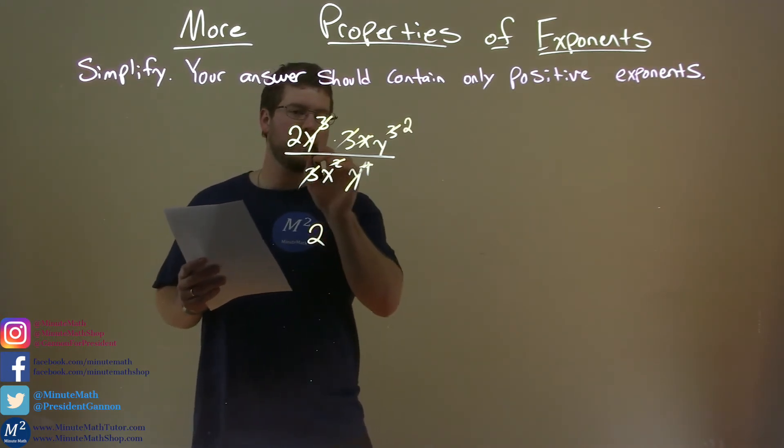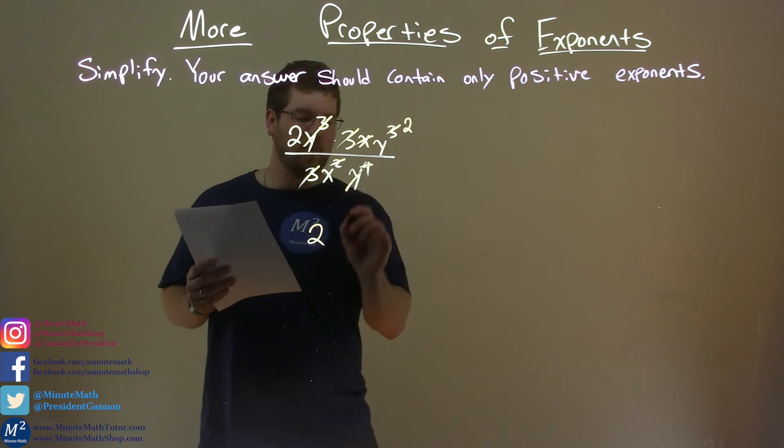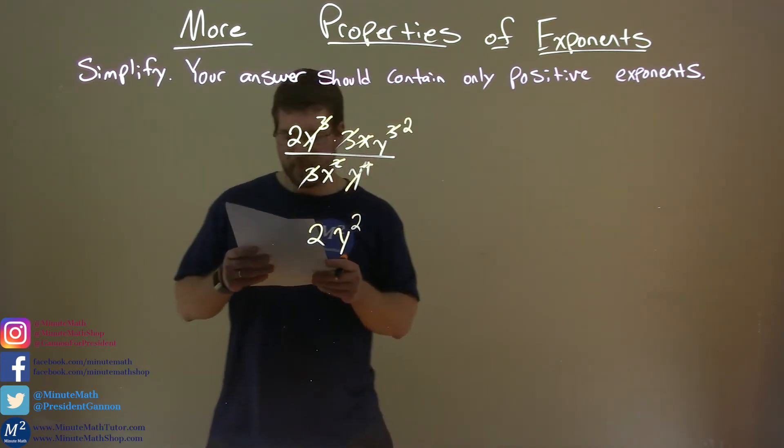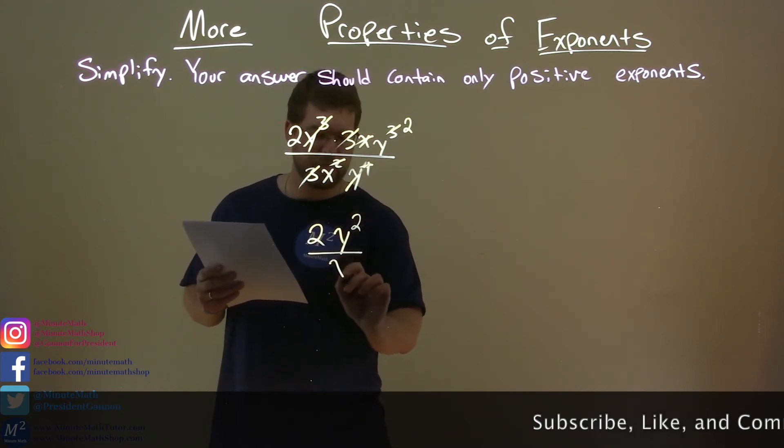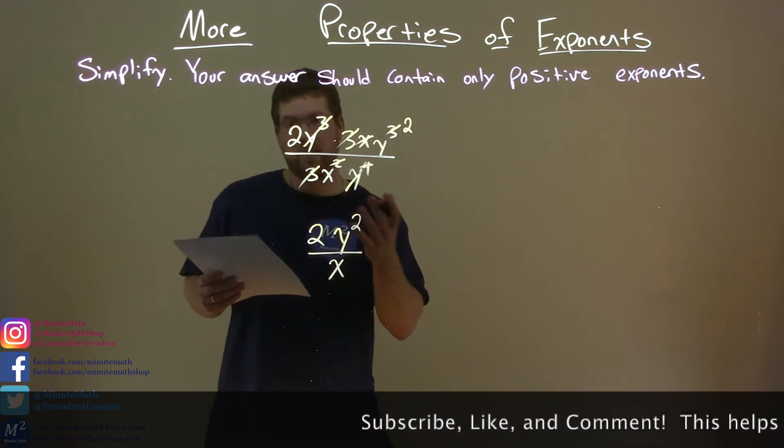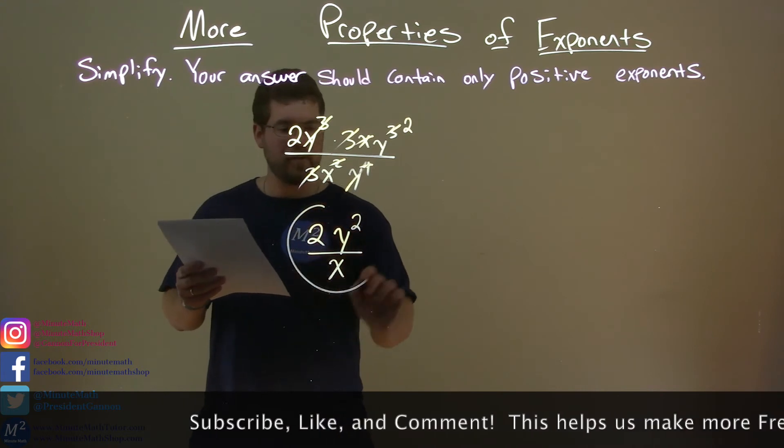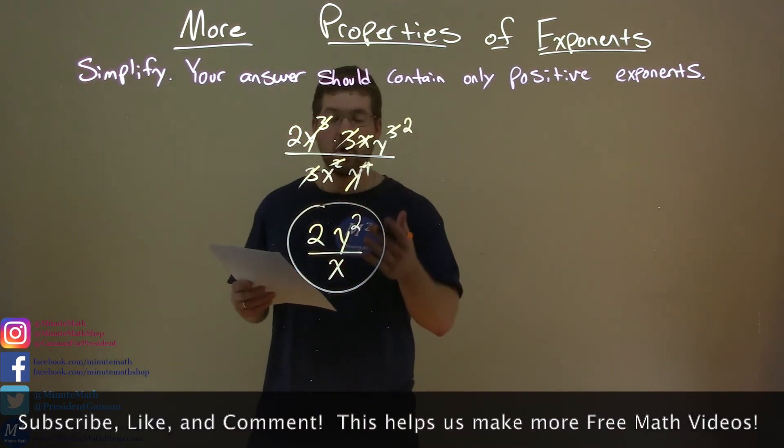2, right there is left over. We got rid of all that, and we're left with a y squared. Anything else in the denominator? And we have just this x. Don't forget it. And that's it. There's nothing else to simplify. So our final answer here is just 2y squared over x.